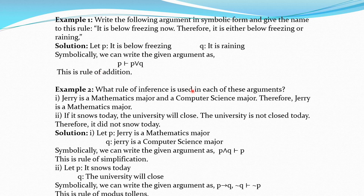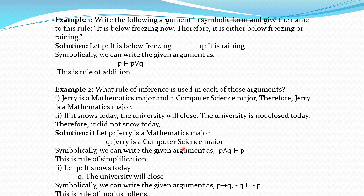Second example: 'Jerry is a mathematics major and a computer science major. Therefore, Jerry is a mathematics major.' Let P = Jerry is a mathematics major, Q = Jerry is a computer science major. In symbolic form: P ∧ Q ⊢ P. The rule used here is the Rule of Simplification.